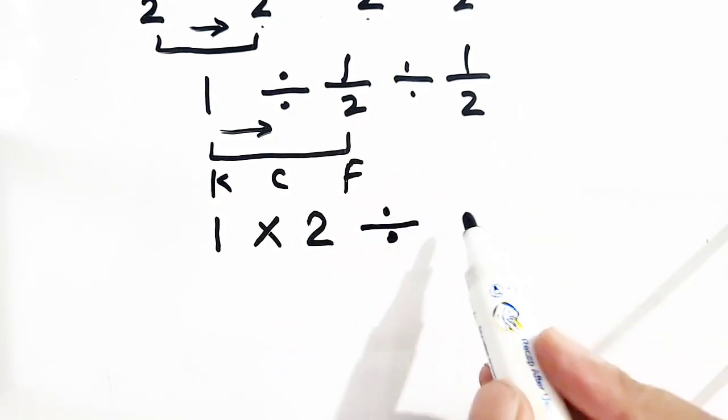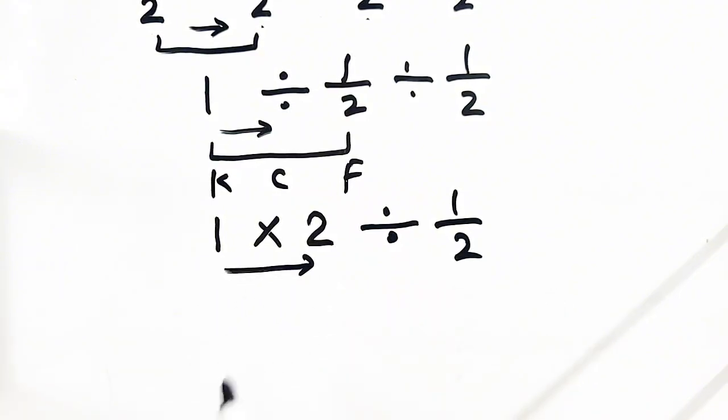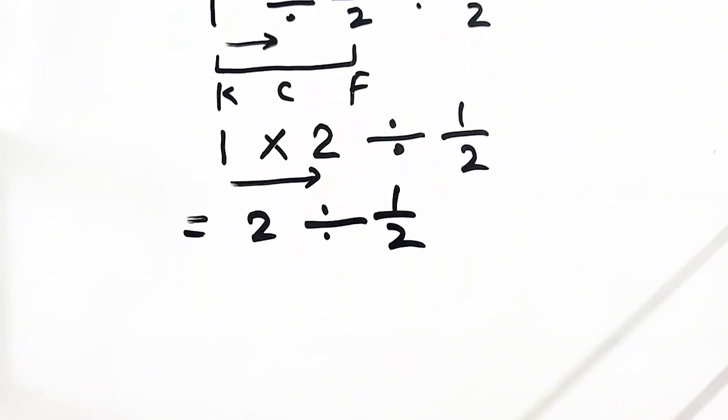Divided by no change, it will remain same, 1 by 2. Now, again, we have to move from left to right. So, 1 times 2 is equal to 2 divided by 1 by 2.